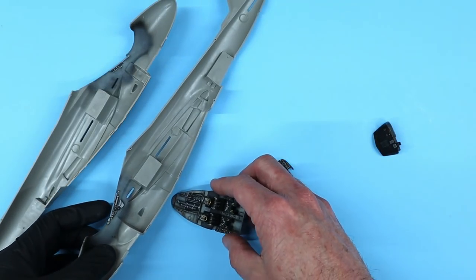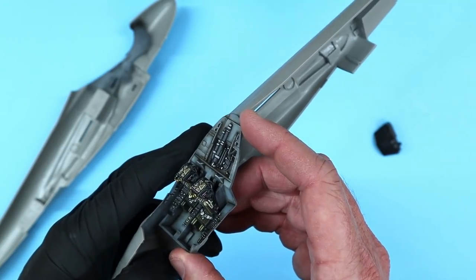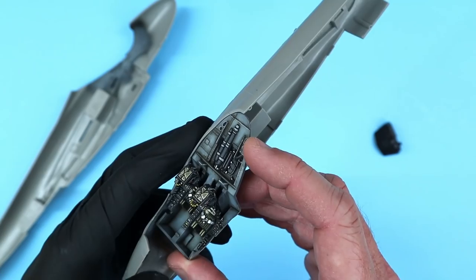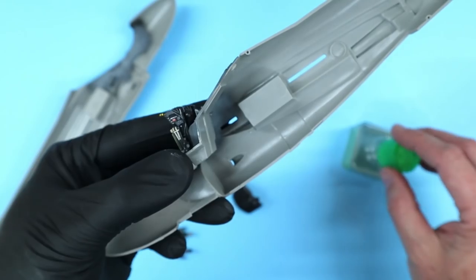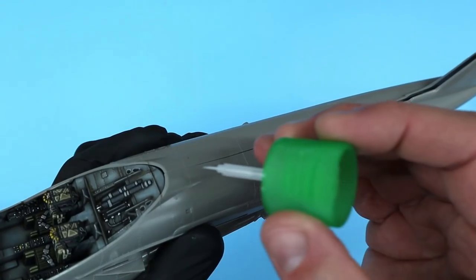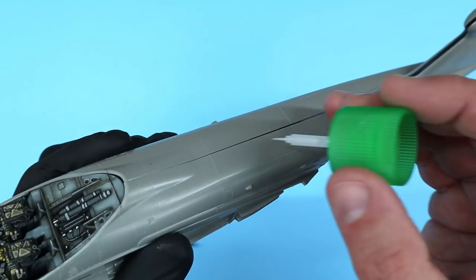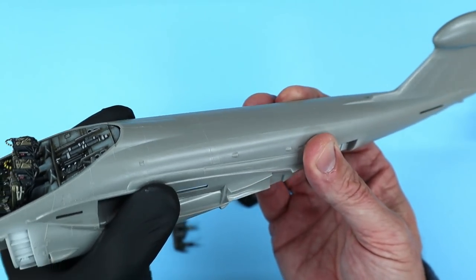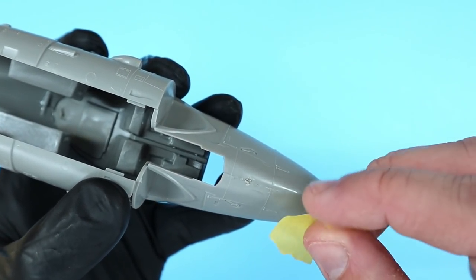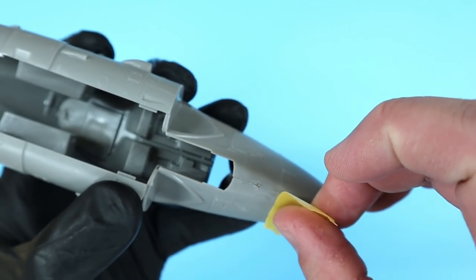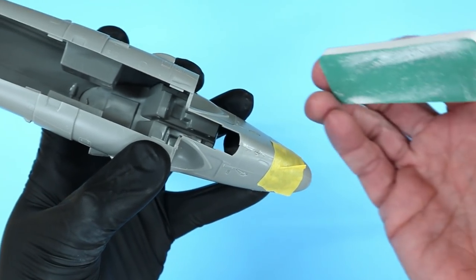The cockpit tub sits in place on top of a couple locating tabs on the right fuselage half. I glued the tub in place with a little Tamiya cement. I then joined the right and left fuse halves together using more cement. Everything was held in place with some masking tape to ensure good alignment of the parts, as well as alignment of the raised panel lines.